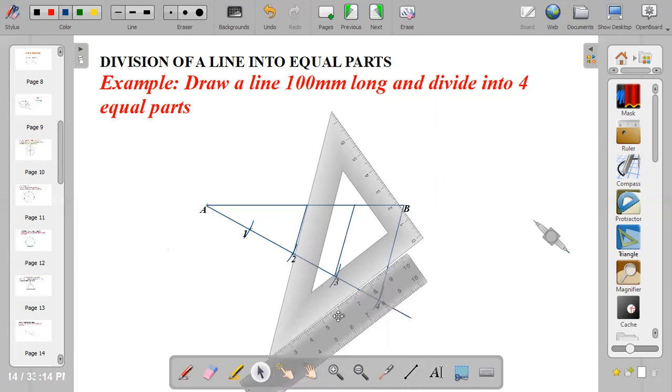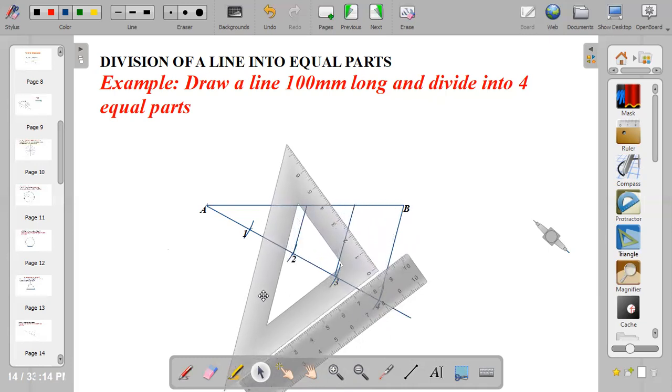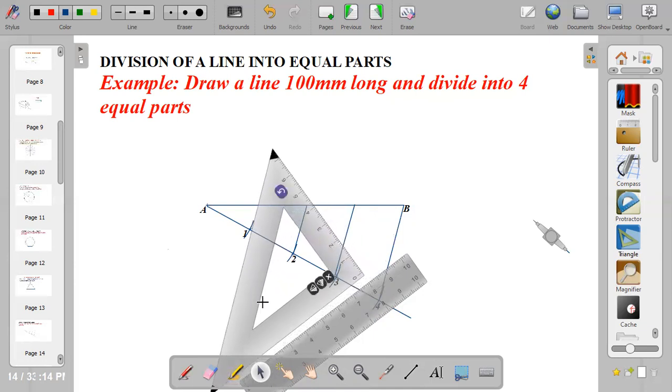Make sure your ruler is held firm to the paper and move it freely to division one. Then draw another line.